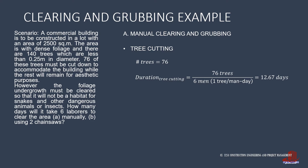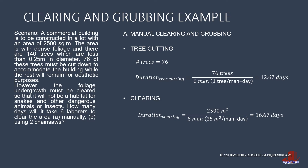After the trees are cut, we proceed with clearing the dense foliage. The area of 2,500 square meters will be cleared by six men with an output of 25 square meters per man per day, and it will result in 16.67 days. So the total duration will simply be the summation of durations of tree cutting and clearing — 12.67 plus 16.67 — resulting in 29.37 days, which can be rounded to 29 and a half days for all six laborers.